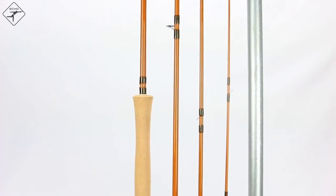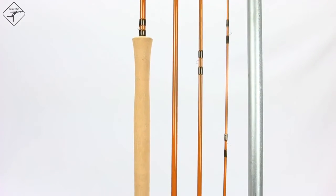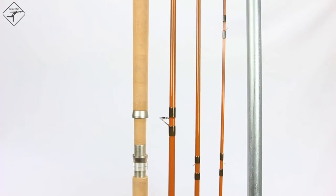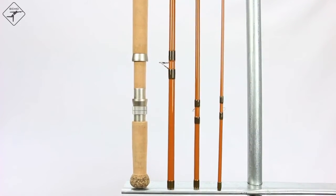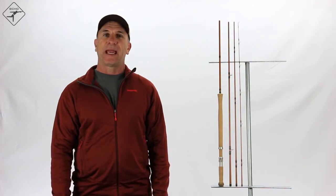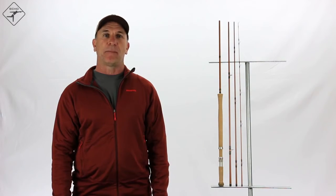The rod blank is a golden caramel color with olive thread wraps. We chose to use traditional chrome snake guides and ceramic stripper guides to improve the performance of the cast and while fighting a fish. We created a handle shape reminiscent of the Fullwell's grip, and we used an up-locking reel seat to help balance the rod.